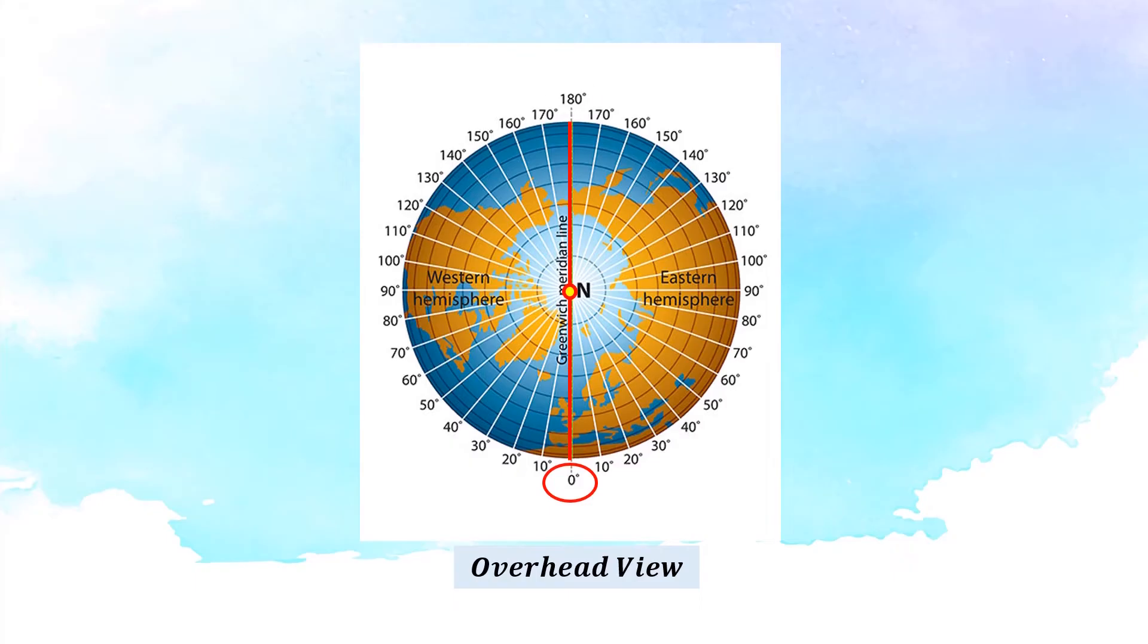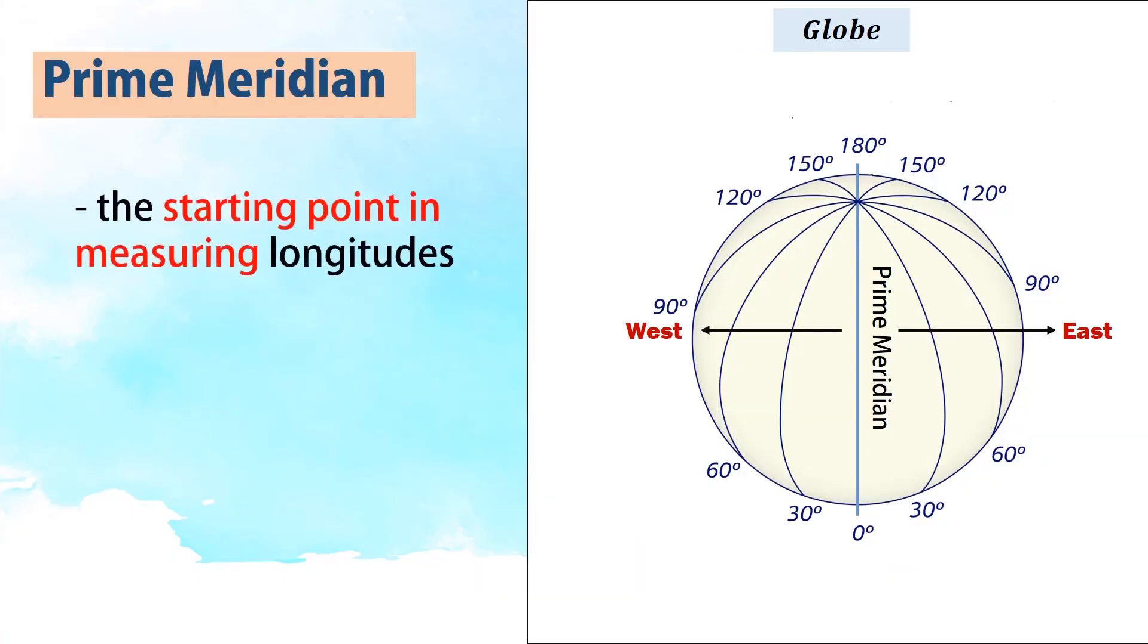From zero degrees up to 180 degrees west is the western hemisphere. On the other hand, from zero degrees to 180 degrees east is the eastern hemisphere. The prime meridian is the starting point in measuring longitudes.